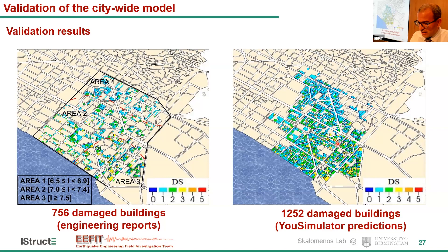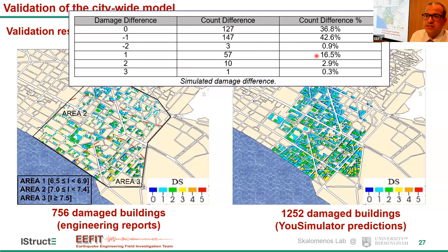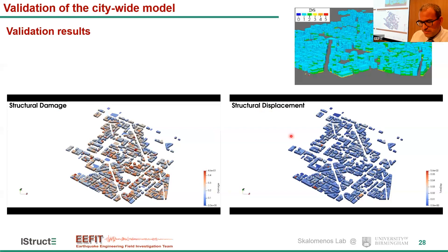This is an optimization process to account for differences in construction methods used during that period. Looking at the difference between the simulated sample and the damaged area, about 35–36% of the buildings show zero damage difference, and nearly 60% show a difference of minus one or plus one damage state. This represents a relatively good simulation. A video demonstrates the virtual representation of the buildings' time history response — structural displacement and structural damage — including a three-dimensional simulation module showing which floor experienced the highest story drift.